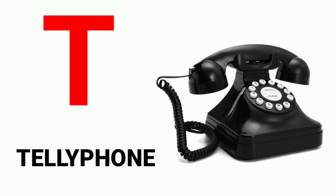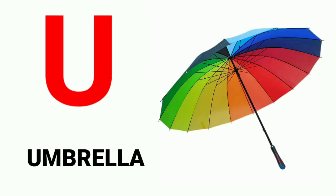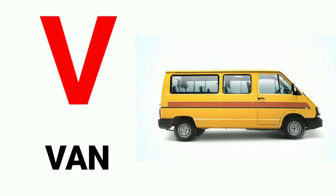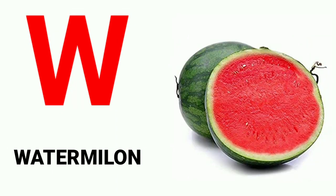R for rose, S for sun, T for telephone, U for umbrella, V for van, W for watermelon.